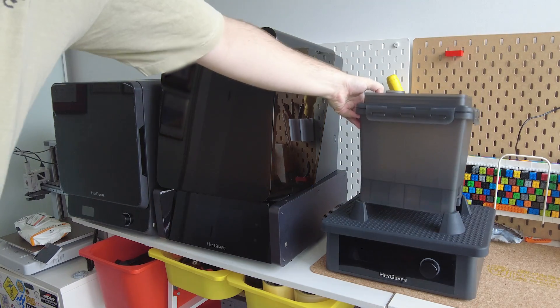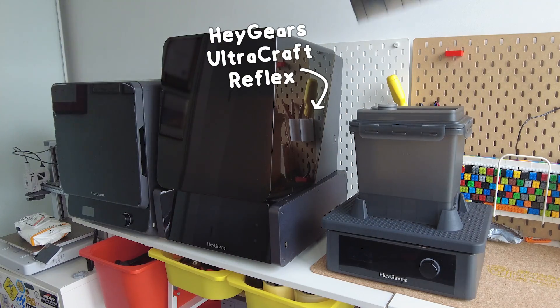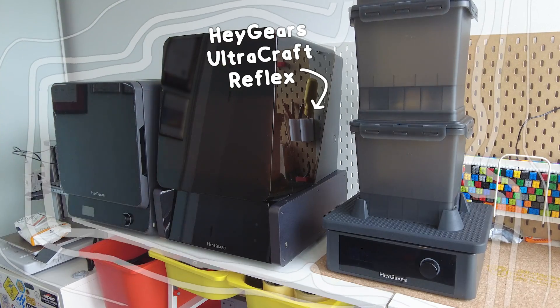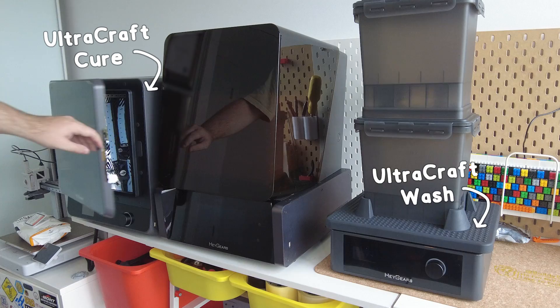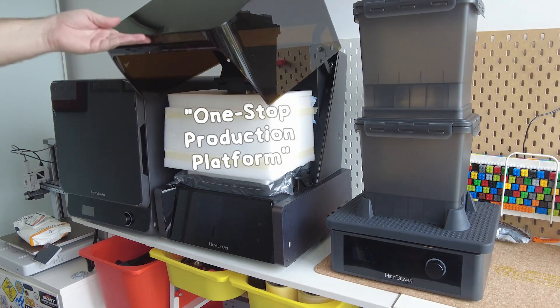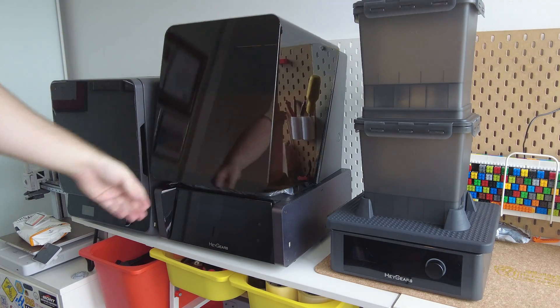And I'm going to show you why. It's called the Haguears Ultra Craft Reflex and you can pick it up separately or as part of the combo package like I have here, which also includes the wash and cure stations.